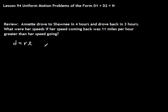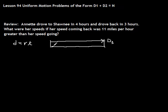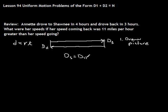These first ones are equal distance problems, and we always start by drawing a little picture. We have a distance from here to here. Annette drove to Shawnee in four hours — she starts here and drives to Shawnee, so we'll call it distance to Shawnee. She drove back home, so we'll call that distance home. With equal distance problems, the distance there equals the distance back. So first you draw your picture, then set your distances equal to each other: distance to Shawnee equals distance home.